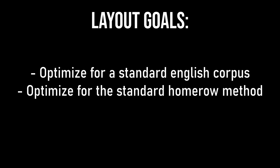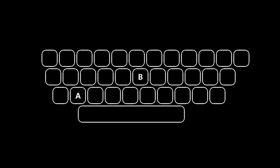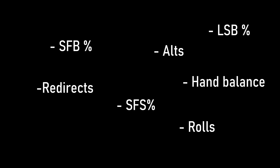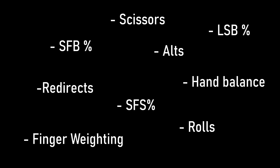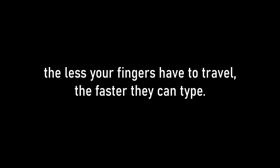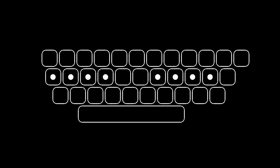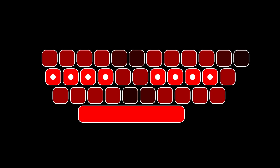Now that we have a sense of what we want our layout to achieve, we can actually start placing letters. There are a lot of different statistics and techniques you could consider during this process, but I'll introduce some of the more common ones that are almost always used. One of the most foundational ideas when it comes to designing a keyboard layout is minimizing the average travel distance of each finger. Generally speaking, the less your fingers have to move, the more comfortable and fast it is to type on your layout. Imagine your fingers are resting on the eight home row keys. If you look at how far each key is from the closest finger, it's clear that some keys are easier to press than others.